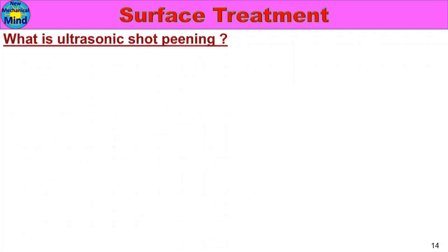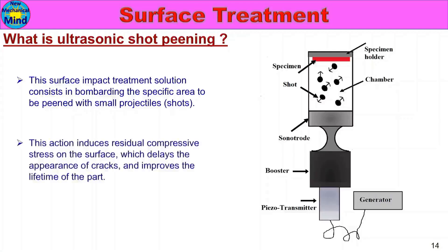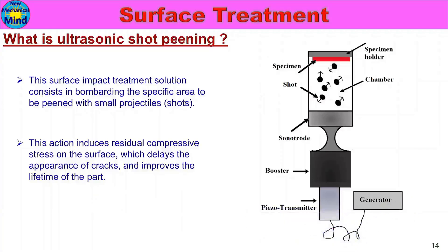What is ultrasonic shot peening? This surface impact treatment consists in bombarding the specific area to be peened with small projectiles — that is, shots. In short peening and water jet peening, shots bombard one piece at a time. This action induces residual compressive stress on the surface which delays the appearance of cracks and improves the lifetime of the part. One piece of plastic deformation improves fatigue life, and cracks or surface defects are delayed. In ultrasonic shot peening, you bombard one piece, create plastic deformation and compressive residual stress, increase the surface life.